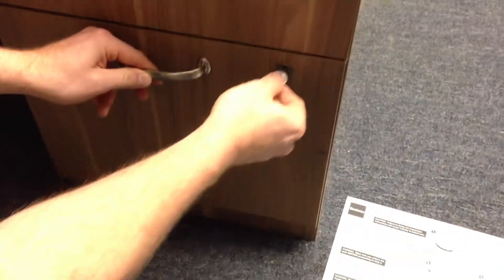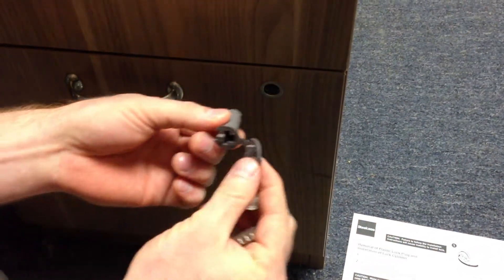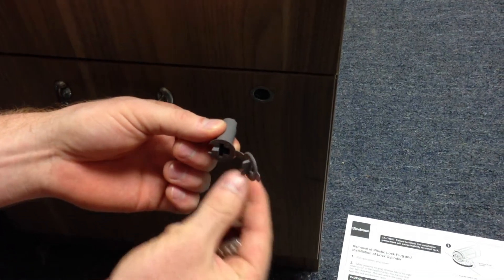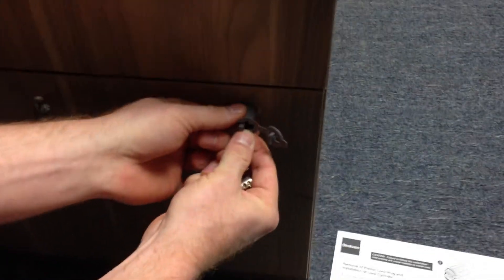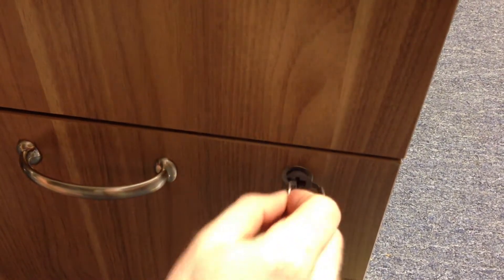Now I'm going to show you a couple other methods in case this came out. Say this fell out. How do you put it back in? You're going to do it with the hinge on the right and go straight in. Press that in like that. Now that's there. You open the door, do the same thing, turn.